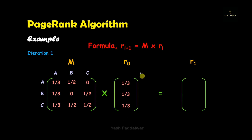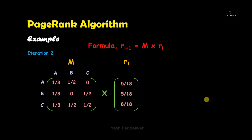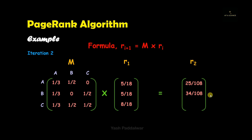Once we compute r1, we move to iteration 2. In iteration 2, we multiply M × r1 to find r2. After multiplication, the r2 vector contains: first record 25/108, second record 34/108, and third record 49/108. This is how we computed the r2 vector.